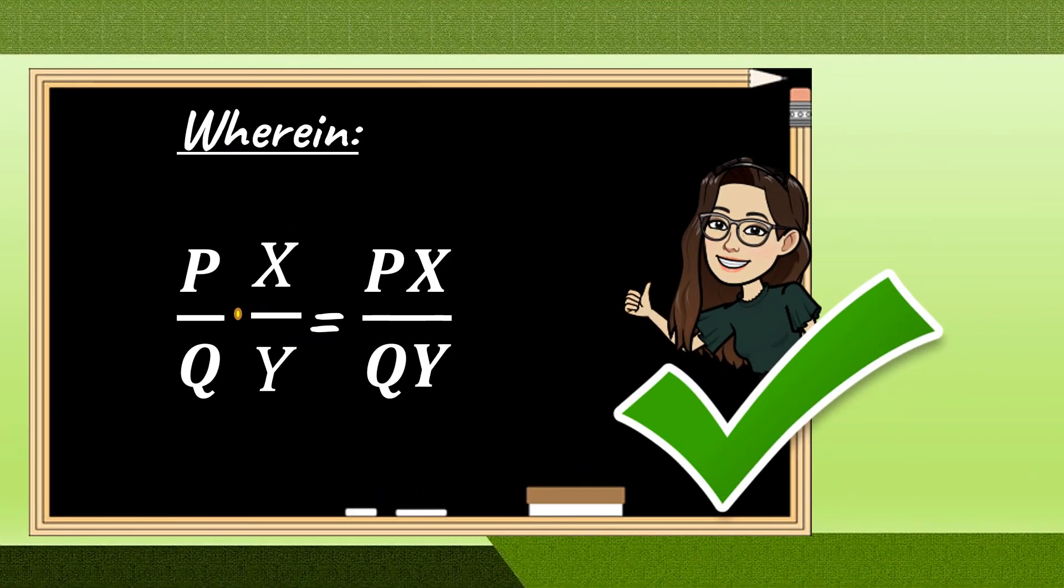Where P over Q multiplied by X over Y is equal to PX over QY.